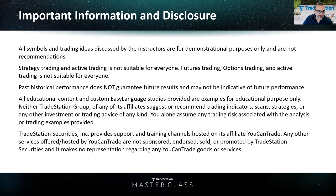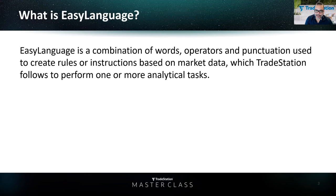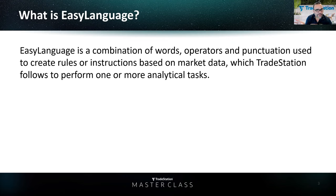The first thing we're going to do is define Easy Language. Easy Language is a combination of words, operators, and punctuation that is used to create rules or instructions based on market data, which TradeStation follows to perform analytical tasks. The language has its own words and its own way of structuring a sentence. You have to use the right punctuation and set it in a particular way for TradeStation to understand. Once you set up the code correctly, TradeStation mixes the code with market data and performs analytical tasks — and can also generate orders.